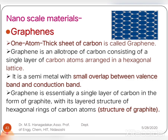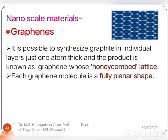Graphene is a semi-metal with a small overlap between the valence band and conduction band, hence it is used as a semiconductor. Graphene is essentially a single layer of carbon in the form of graphite, which is a layered structure of hexagonal rings of carbon. It is possible to synthesize an individual layer of one atom thickness. The resulting product has a honeycomb lattice structure, and each graphene molecule is fully planar in shape.